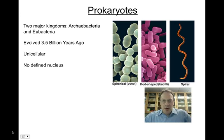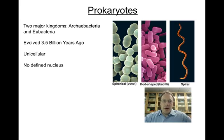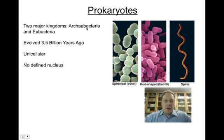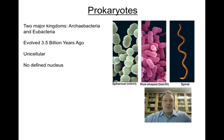That was your quick introductory video. Let's talk about generalities of prokaryotes. These are the two major kingdoms that prokaryotes can be grouped into: archaeobacteria and eubacteria. As you heard from the video, it's thought that prokaryotic organisms are the first organisms to have existed on our planet, first appearing about three and a half billion years ago.